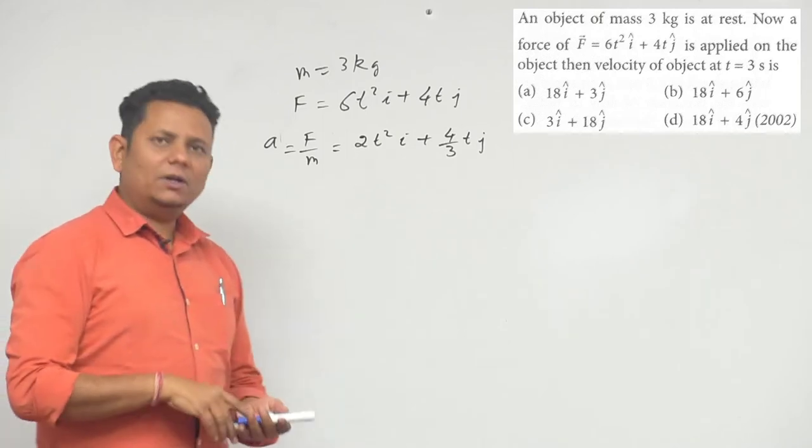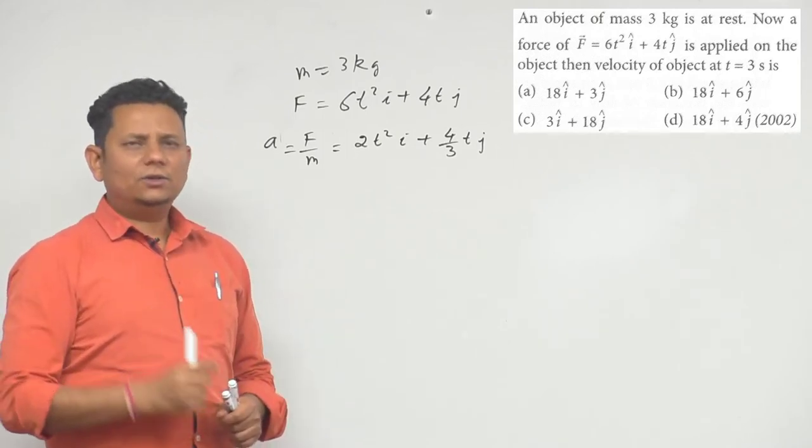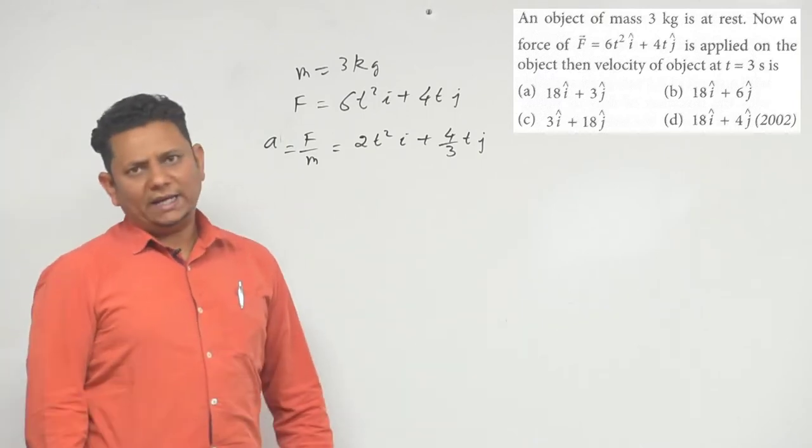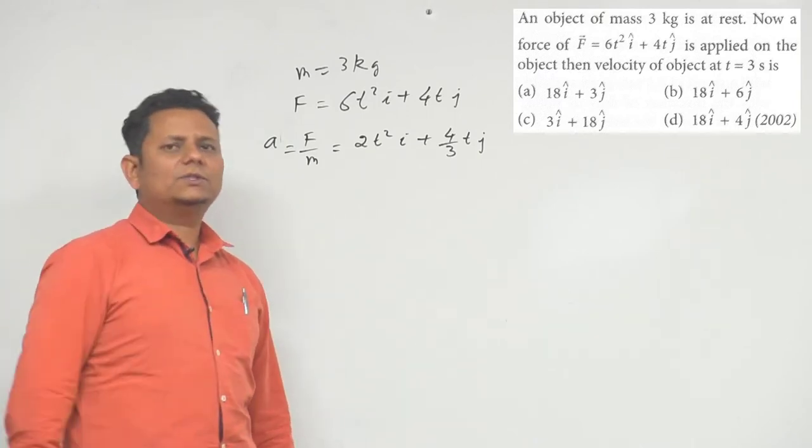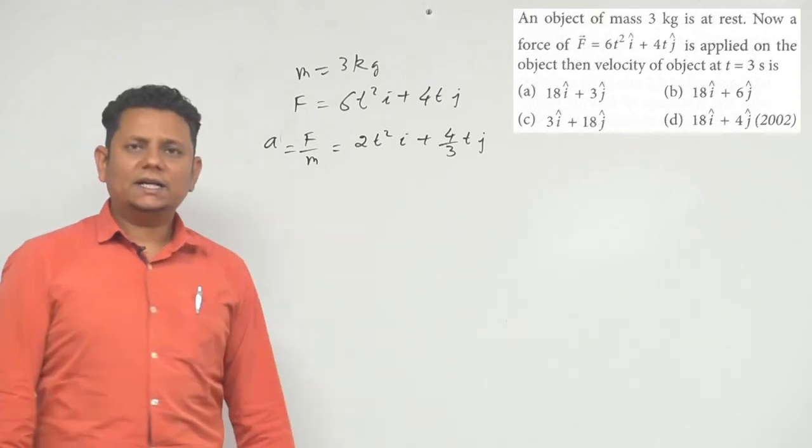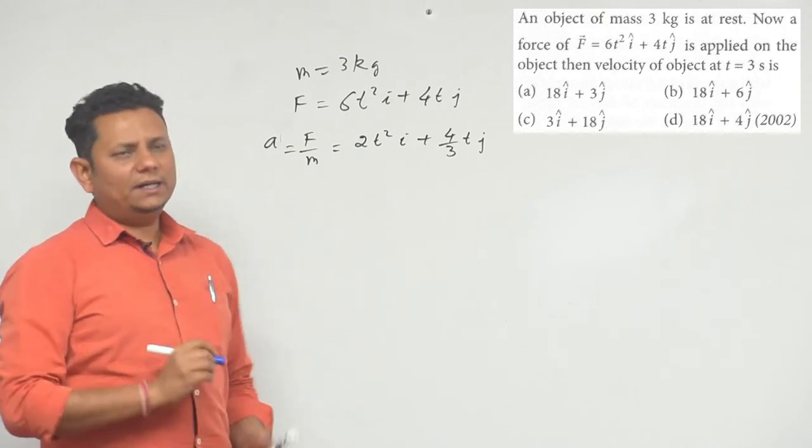We need to find the velocity at t = 3 seconds. In this case, we will not apply the direct Newton equation because it is only applied when your acceleration is constant. If you notice here, the acceleration is variable. So in this case, we need to integrate.